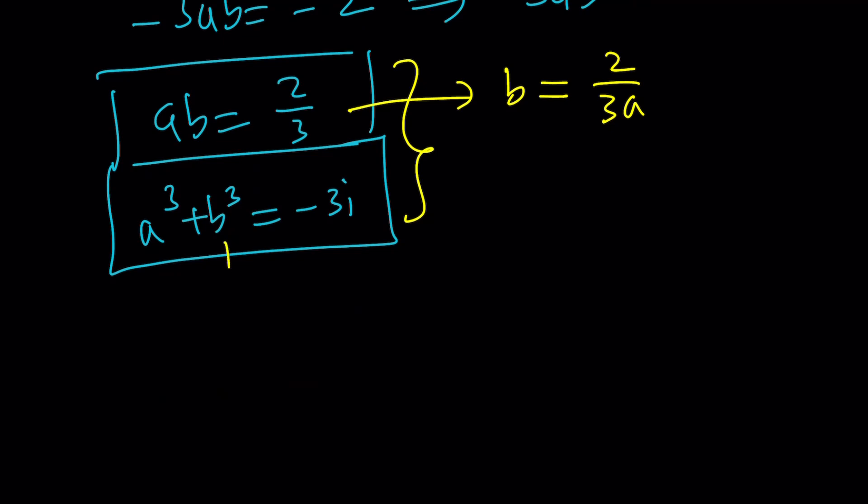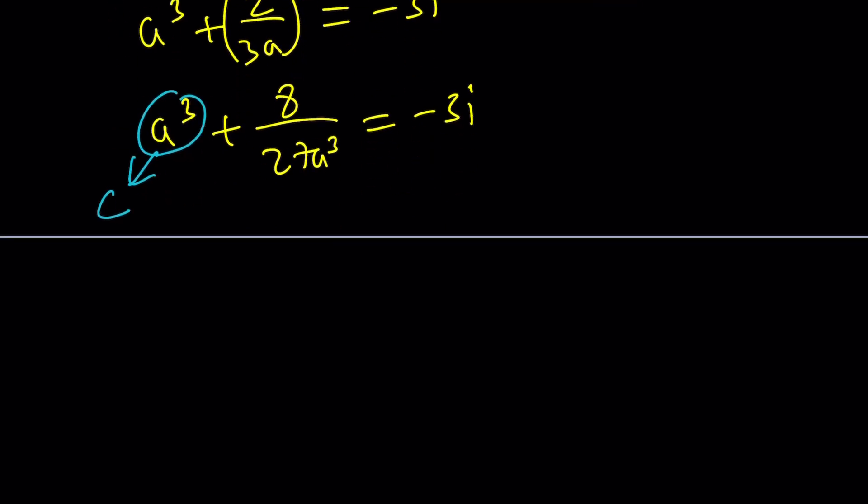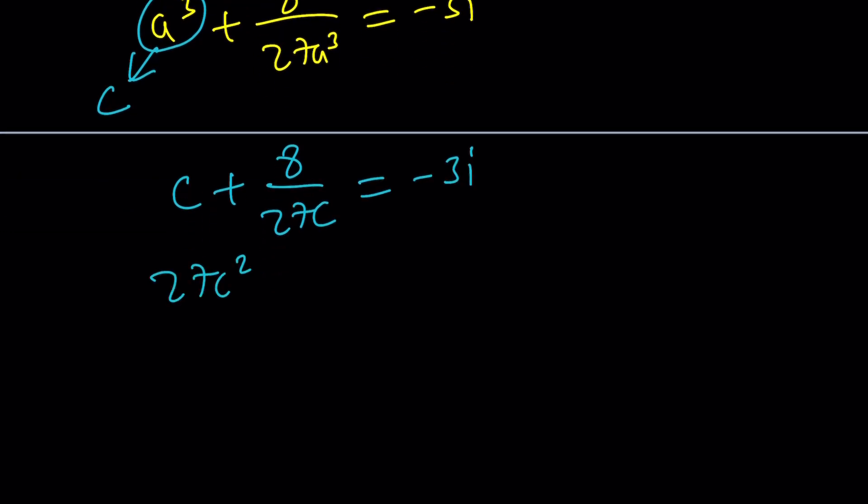Isolate B and write it as 2 over 3a. And here, if you substitute a cubed plus 2 over 3a cubed equals negative 3i, you're going to get a cubed plus 8 over 27a cubed equals negative 3i. Now, at this point, it will be helpful if you could just substitute something for a cubed, which is like c. c plus 8 over 27c equals negative 3i. Make a common denominator. 27c squared plus 8. And then multiply by that. You're going to get negative 81ci. This is quadratic.